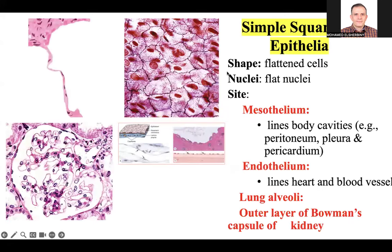Number one: simple squamous epithelium. Squamous means the cell looks flat — the cells are flat and the nucleus of the cell is also flat. Squamous means flat, flat cells with flat nuclei. Where can we find simple squamous epithelium? Number one: the alveoli of the lung.